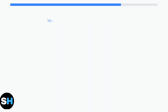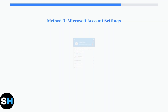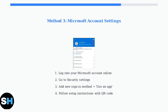Method three uses your Microsoft account security settings. Log into your Microsoft account online, navigate to security settings, and add a new sign-in method. Select 'Use an app' and follow the setup instructions to configure the Authenticator app with a fresh QR code.